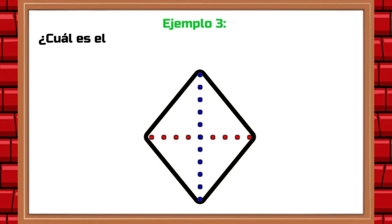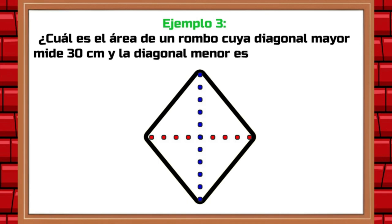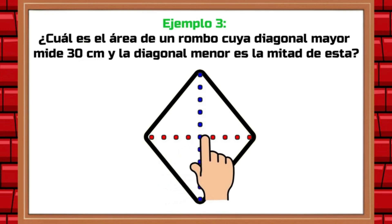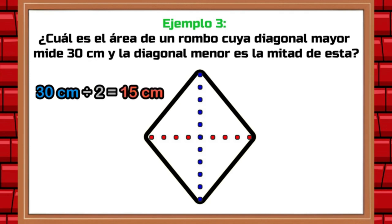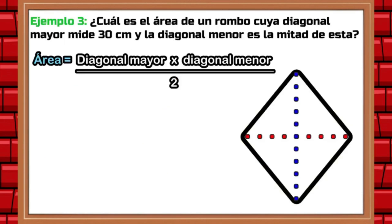Example 3. What is the area of a rhombus whose major diagonal measures 30 centimeters and the minor diagonal is one-half of that? For this exercise, we know that the longest diagonal measures 30 centimeters. To find the shorter diagonal, we simply take the length of 30 centimeters and divide it by two, which results in a measurement of 15 centimeters. Now that we know each diagonal's value, we use the formula and substitute accordingly.